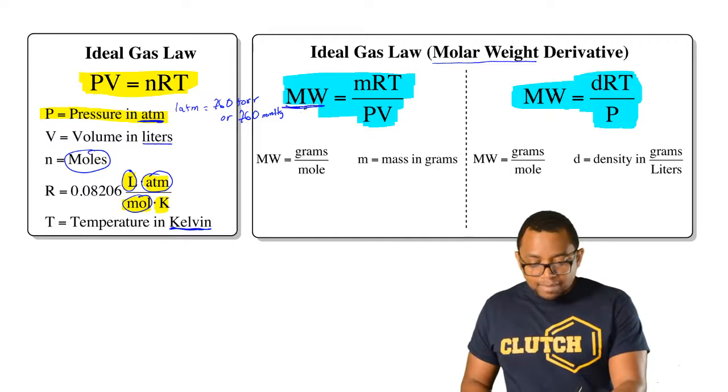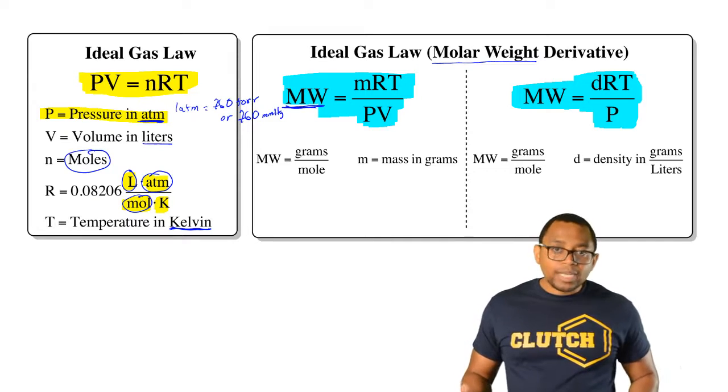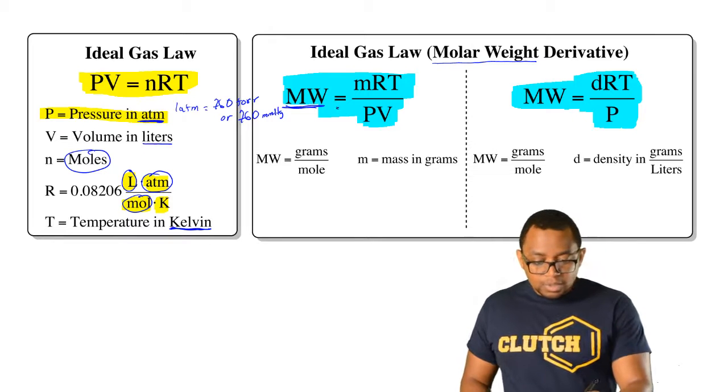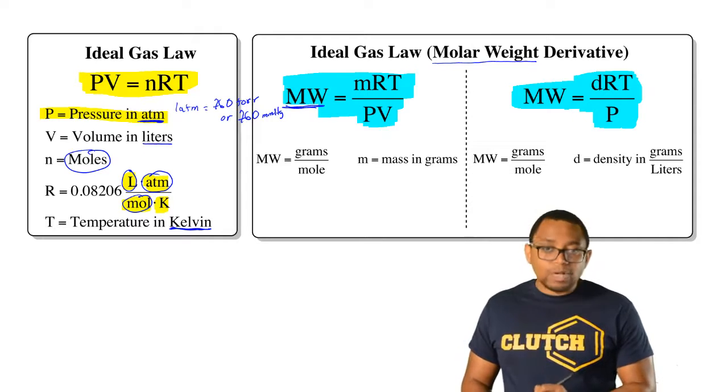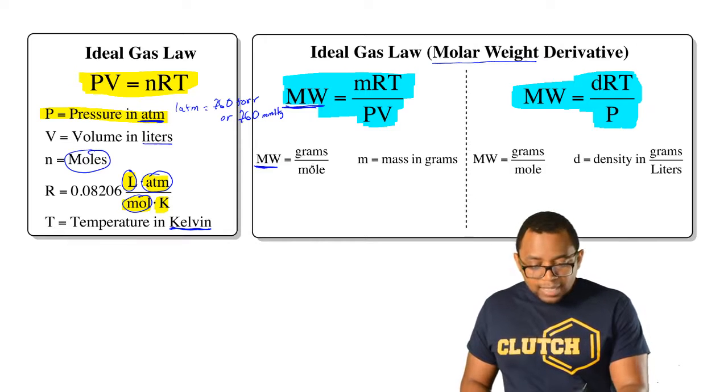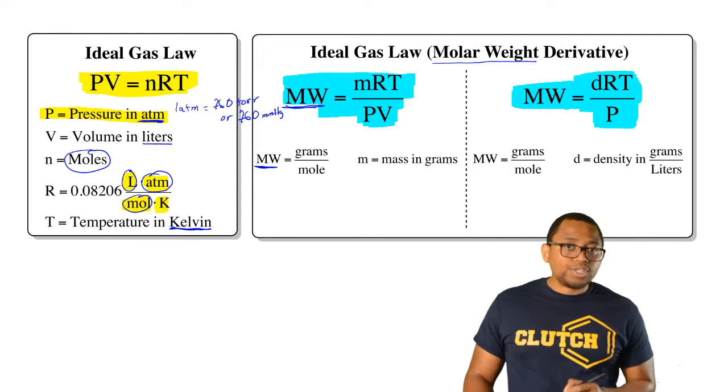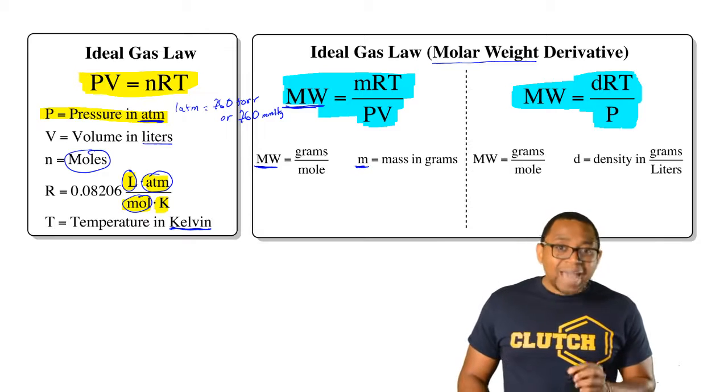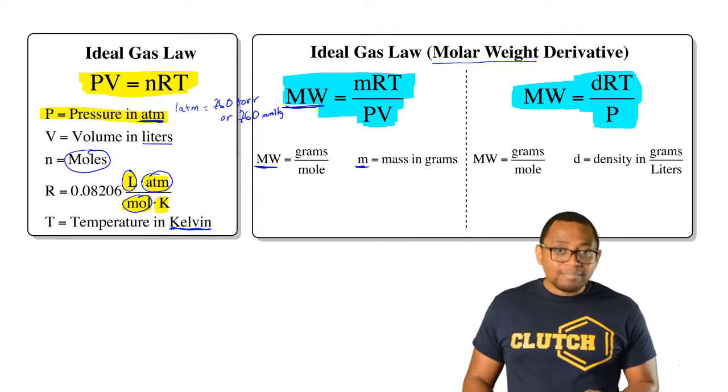Now here, MW stands for molar weight or molecular weight of the gas. So we're going to say here, molecular weight equals mRT over PV. So molecular weight here of the gas will be in grams per mole for its units. Little m represents the mass of the gas in grams.